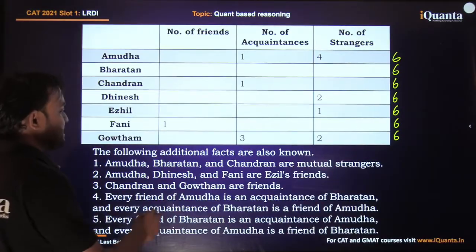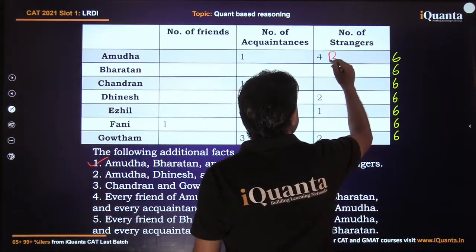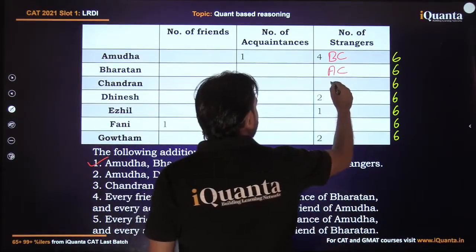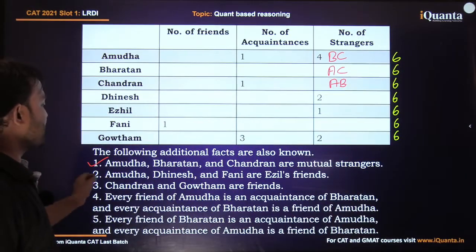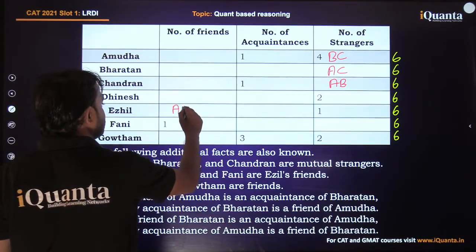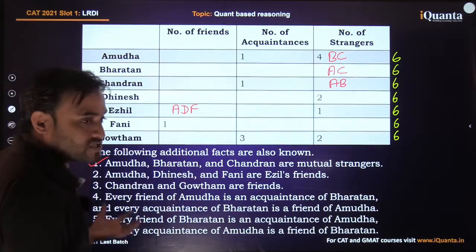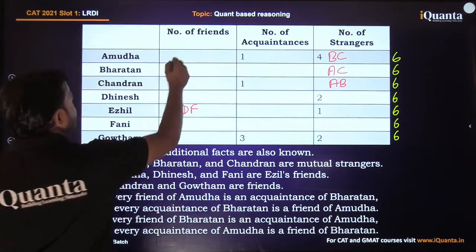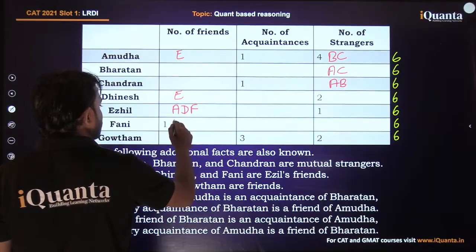The first additional fact says A, B and C are mutual strangers, meaning for A — B and C are strangers; for B — A and C are strangers; for C — A and B are strangers. Next, A, D and F are each a friend of E, so for E we put A, D and F in the friends column. And since the relationship is mutual, E goes into the friends column for A, D and F as well.